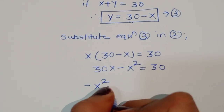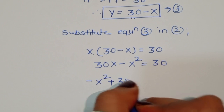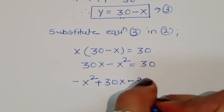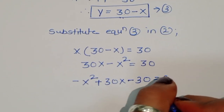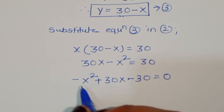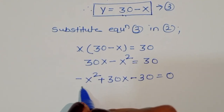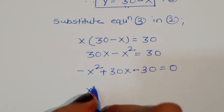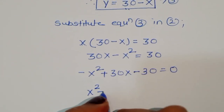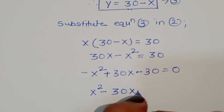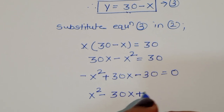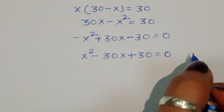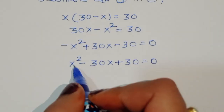Rearranging, we write minus x squared plus 30x minus 30 equals 0. Multiplying through by minus 1, we get x squared minus 30x plus 30 equals 0. Now we have a quadratic equation.